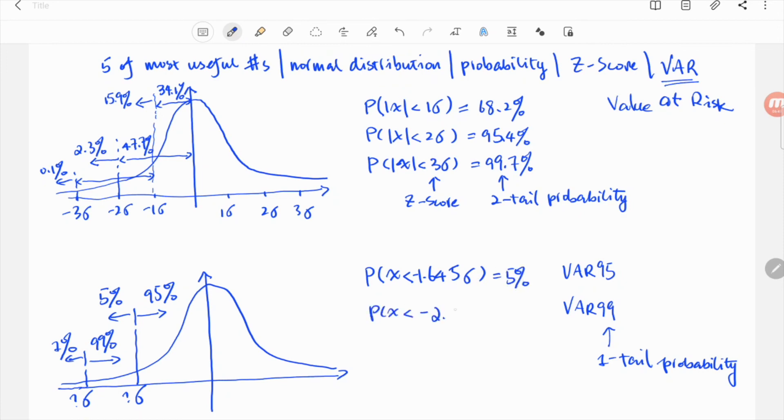While the 1% probability is between 0.1% and 2.3%. So, 189 must be between minus 3 sigma and minus 2 sigma. And the number is 2.326 sigma.